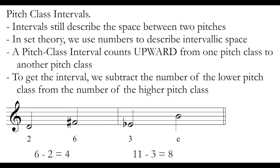To get the number for our interval, we're simply going to subtract the number of the lower pitch class, the first pitch class, from the number of the higher pitch class, the second pitch class. For example, from D to F sharp, D is our first pitch class, it's a 2. F sharp is our second pitch class, it's a 6. That interval is a 4. The pitch class interval is 4.